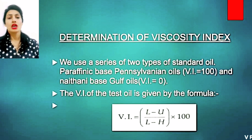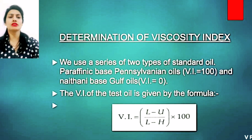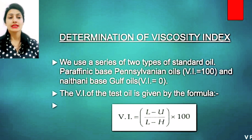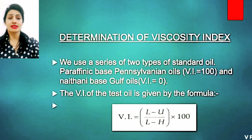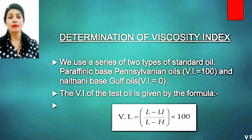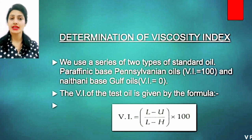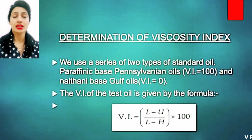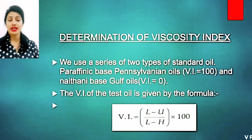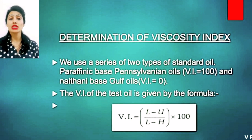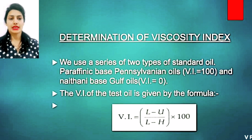We use two types of standard oil. One is paraffinic base Pennsylvanian oil, which has a viscosity index of 100. And the other is naphthenic base gulf oil, which has a viscosity index of 0. We will put these into the formula.